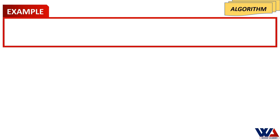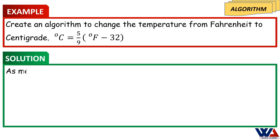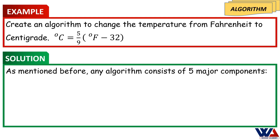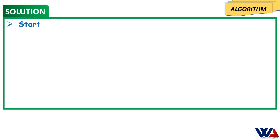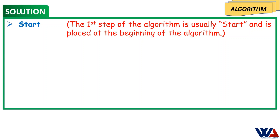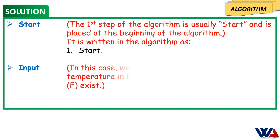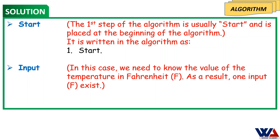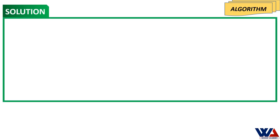Example: Create an algorithm to change the temperature from Fahrenheit to Centigrade. Any algorithm consists of five major components: start, input, calculation, output, and end. The first step is Start. For the input, we need to know the value of the temperature in Fahrenheit, F — so one input, F, exists.